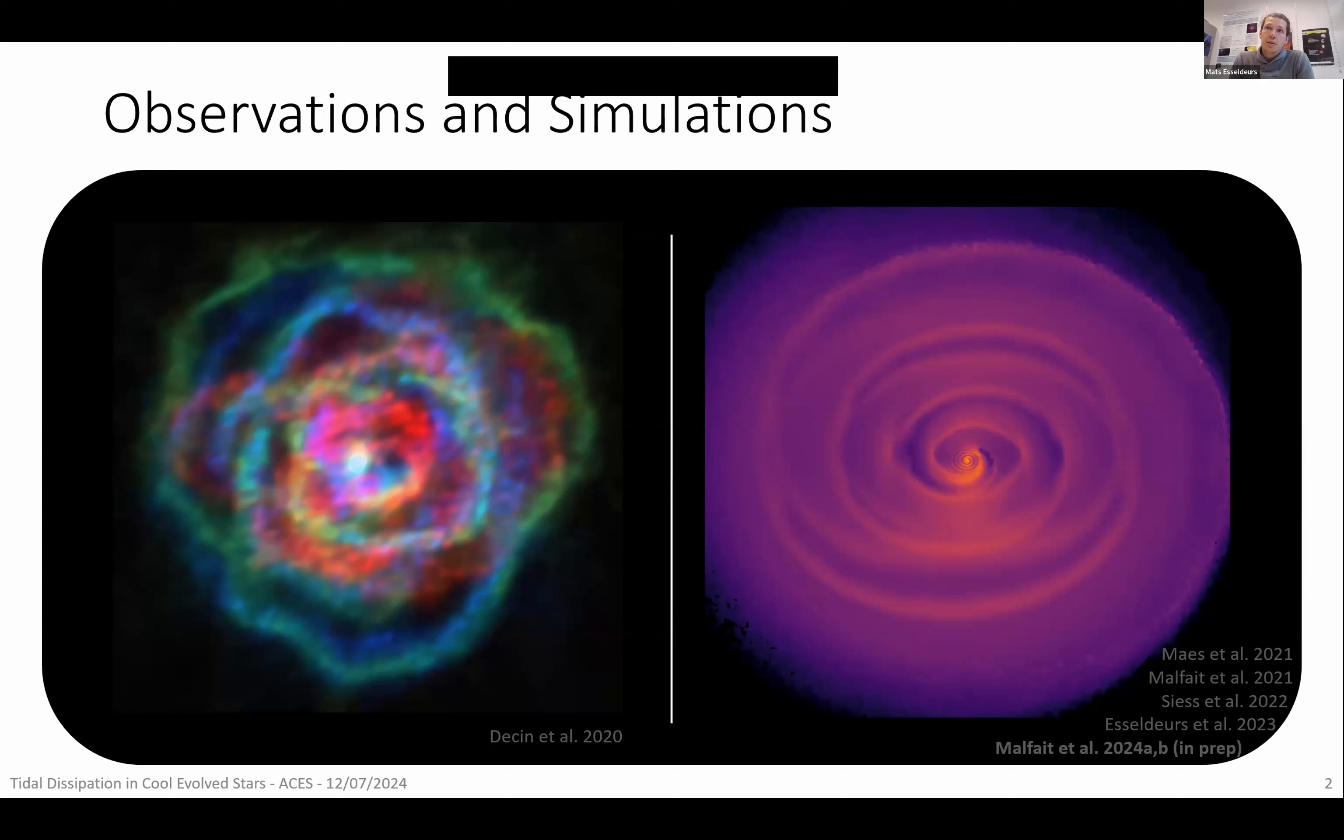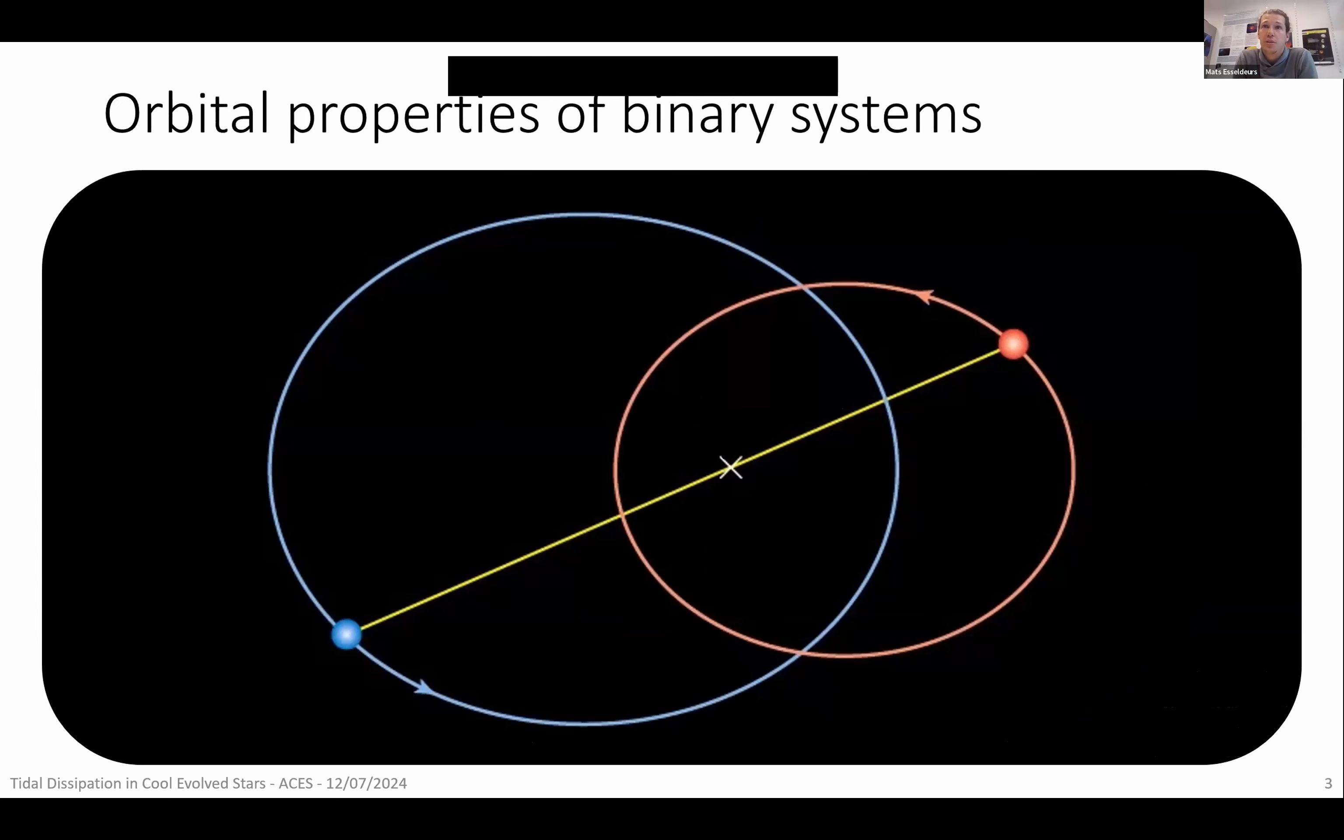But what I am interested in in particular is this triple system or more easily a binary system with an AGB star and more specifically the orbital properties of such systems. What is a typical mass of a primary star, of a companion star? How far away are they from each other? Or in combination with this, what is the orbital period? As well as what is the eccentricity? We don't really have a lot of direct observations of close companions to AGB stars, so it's difficult to do statistics to see which part of the parameter space is filled and which part is not.